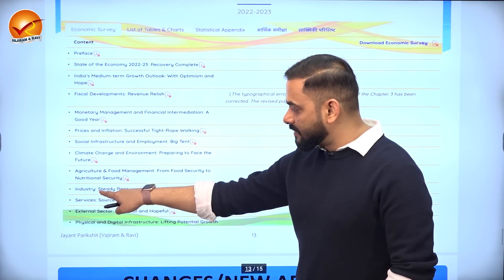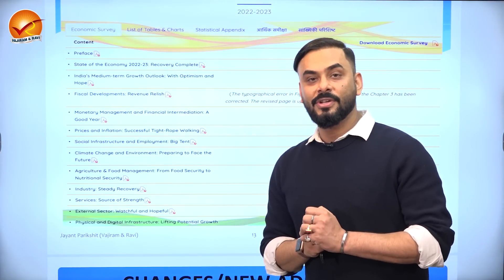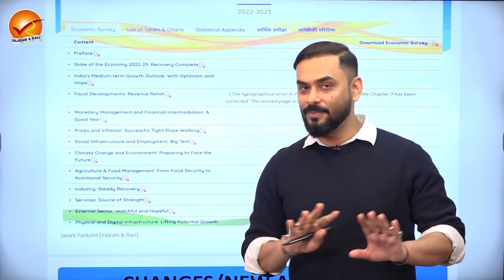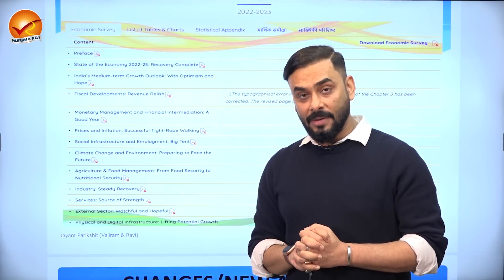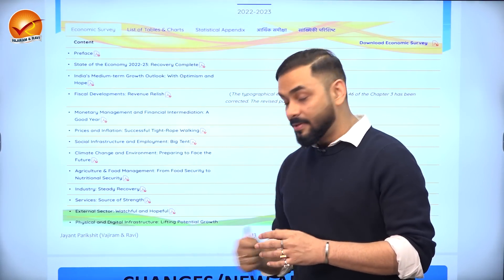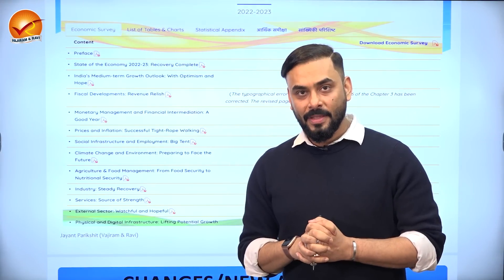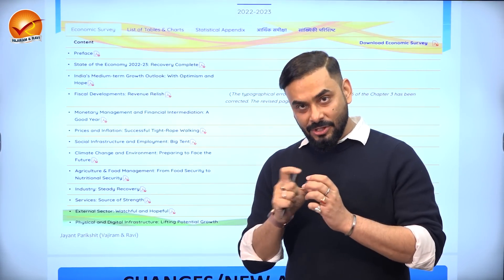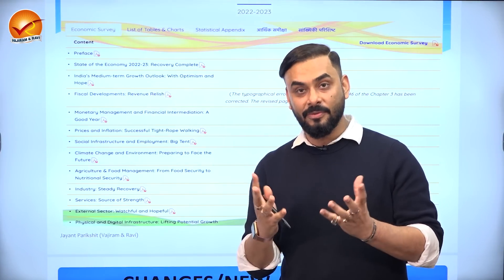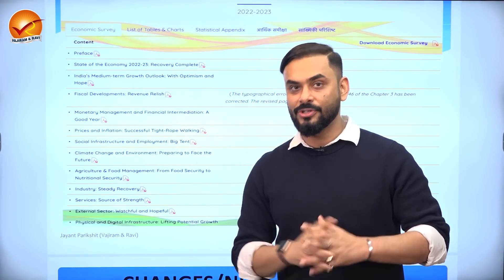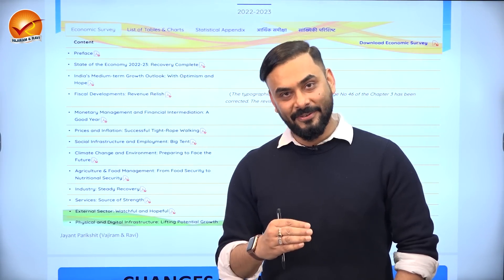This year's Economic Survey has 12 chapters — one more than last year's 11. The 12th chapter focuses on physical and digital infrastructure, because infrastructure is the foundation of economic growth and development. The government of India has paid full attention to this, with two priorities: expanding infrastructure and modernizing it through digital technology, innovation, research and development, and new financing and investment models. Based on these aspects, we will start our series on Economic Survey 22-23 very soon. Thank you.